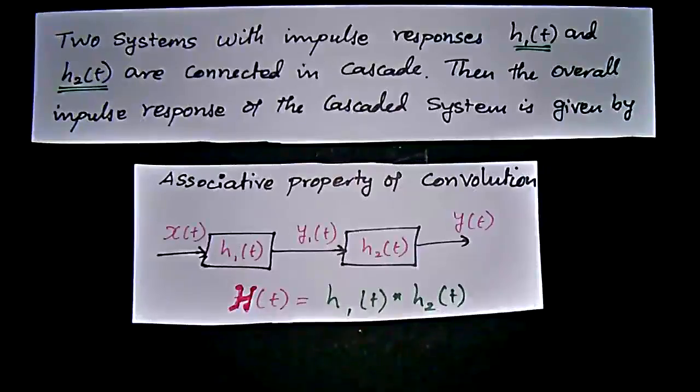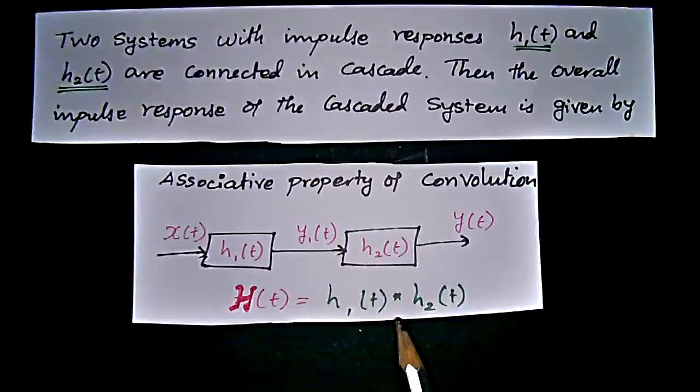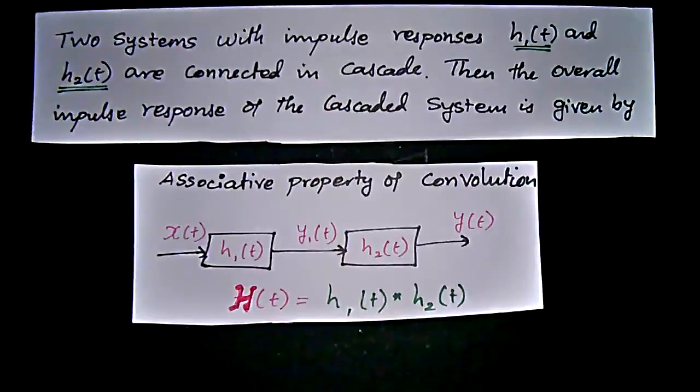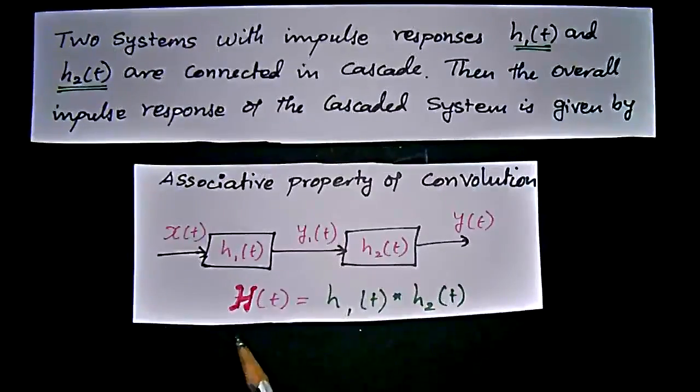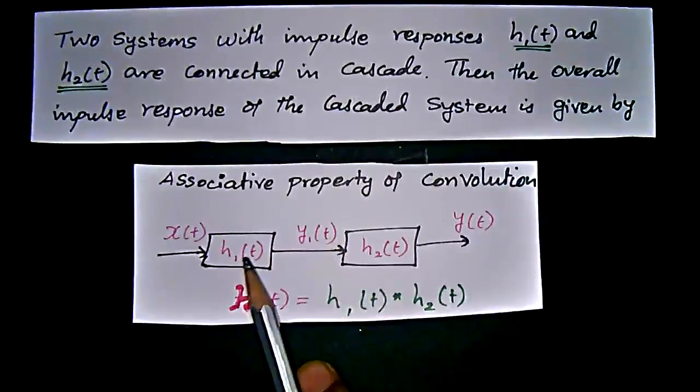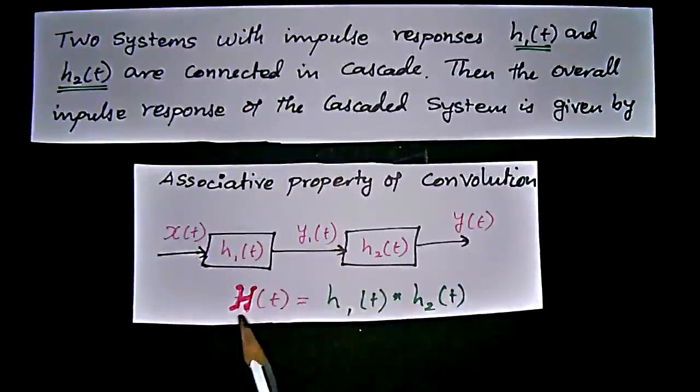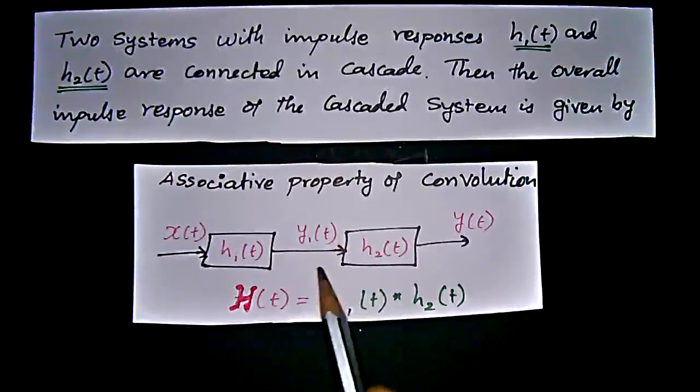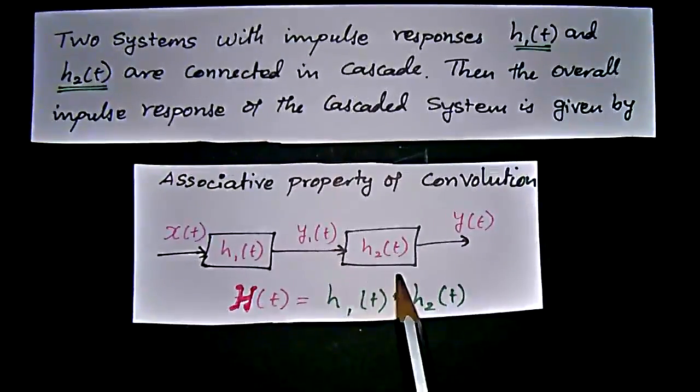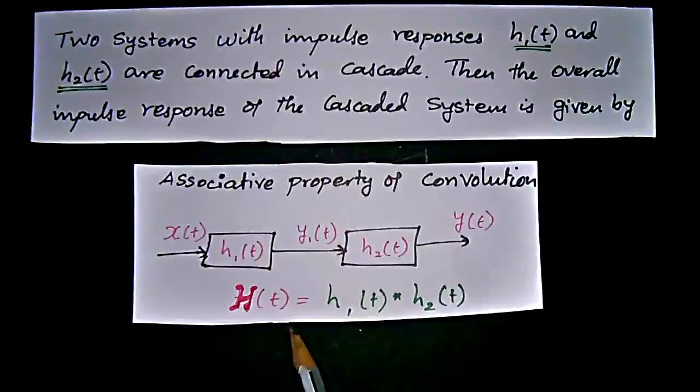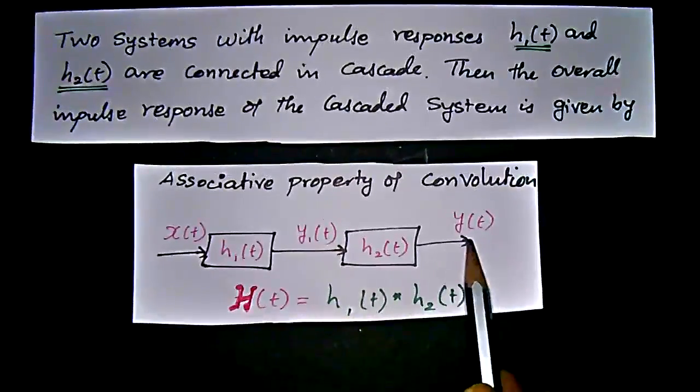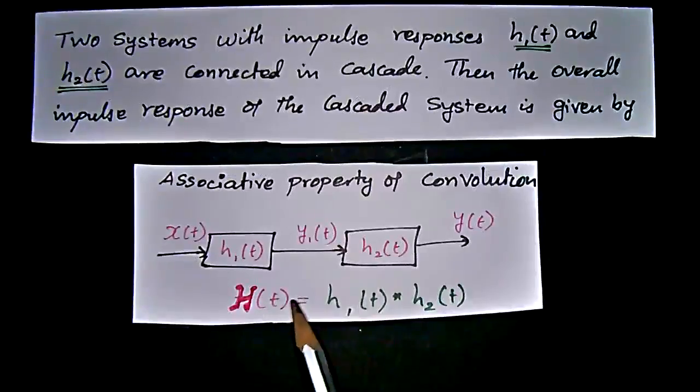The associative property says that when you are given input x(t) to h₁(t) impulse function, we will get y₁(t). Then h₁(t) and h₂(t), through that we will get the output, like x(t) in convolution.